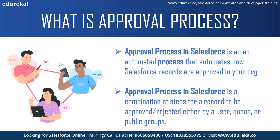The approval process in Salesforce is an automated process that automates how Salesforce records are approved in your org. It is a combination of steps for a record to be approved or rejected by a user, queue, or public groups. The steps include: setting up your approval process, selecting the object, creating a new approval process, selecting the standard setup wizard, entering the process name, unique name, and description, and finally specifying the entry criteria.